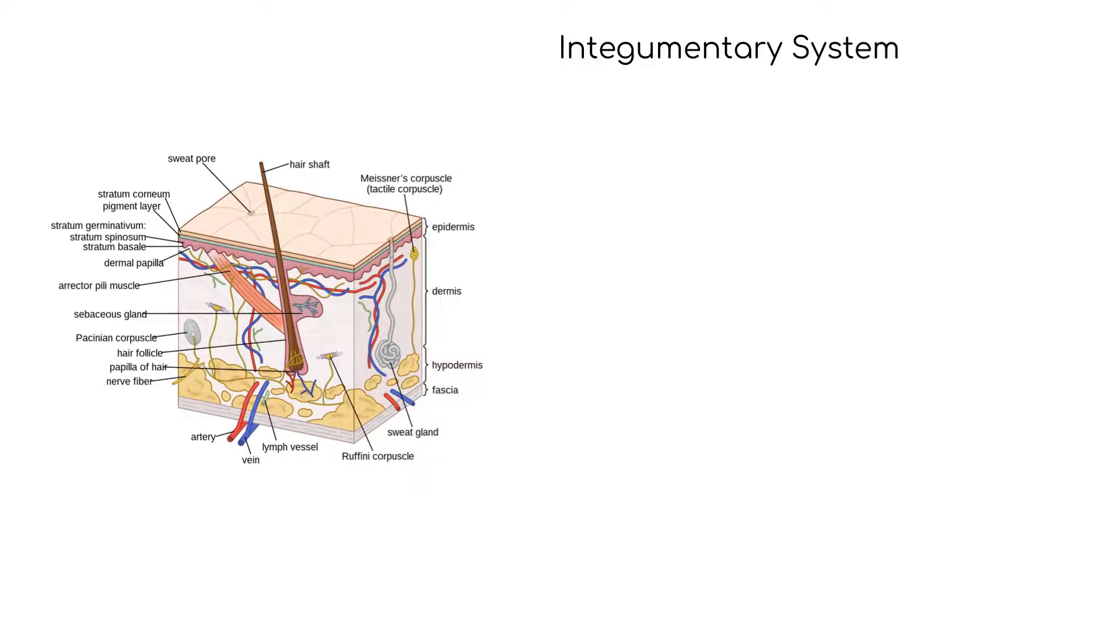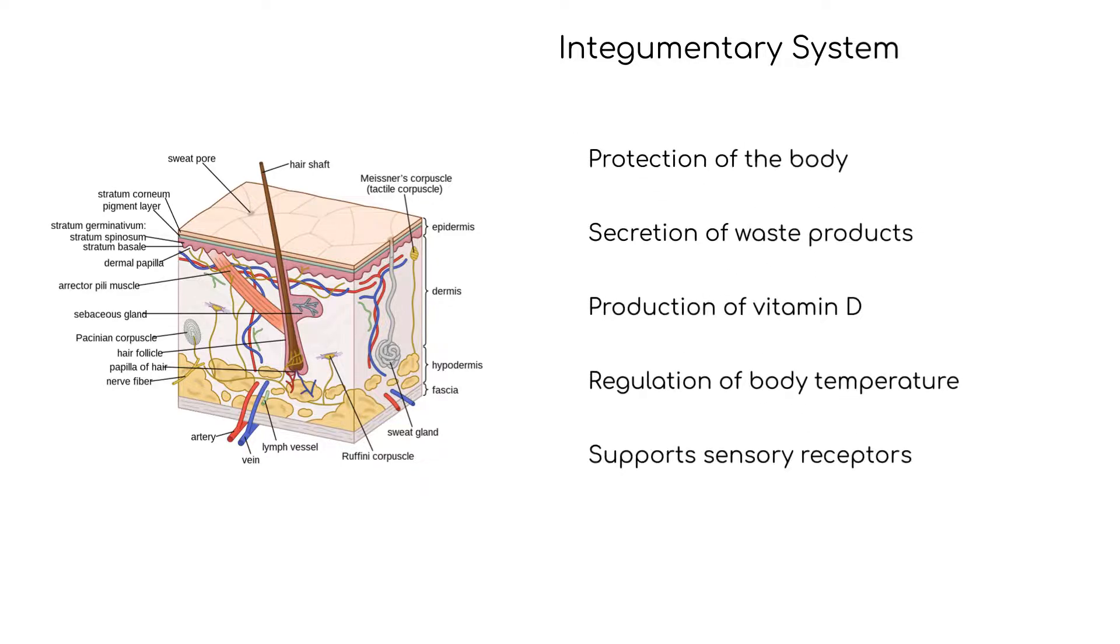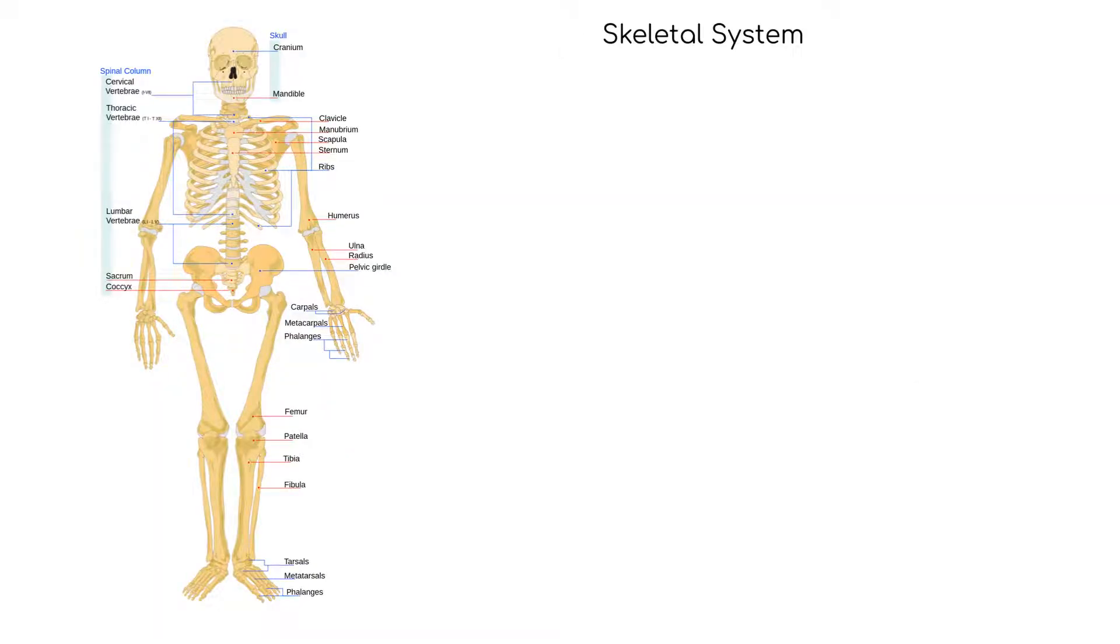The integumentary system consists of the hair, skin, nails, sweat glands, and sebaceous glands. Its function is protection of the body, secretion of waste products, production of vitamin D, and regulation of body temperature. The integumentary system also supports sensory receptors that send information to the nervous system.